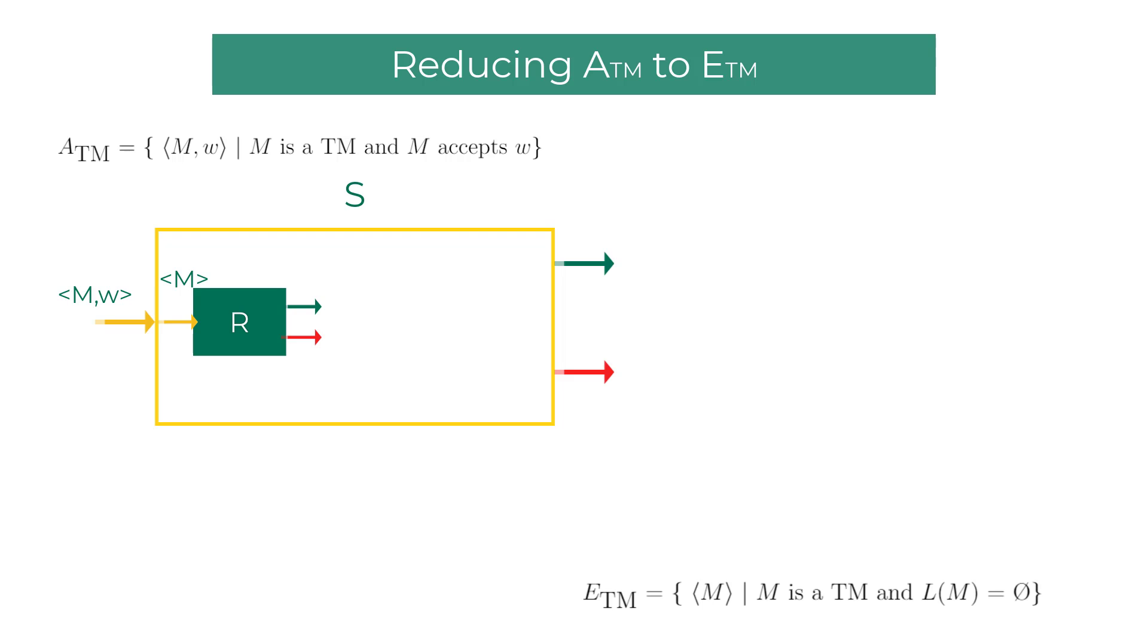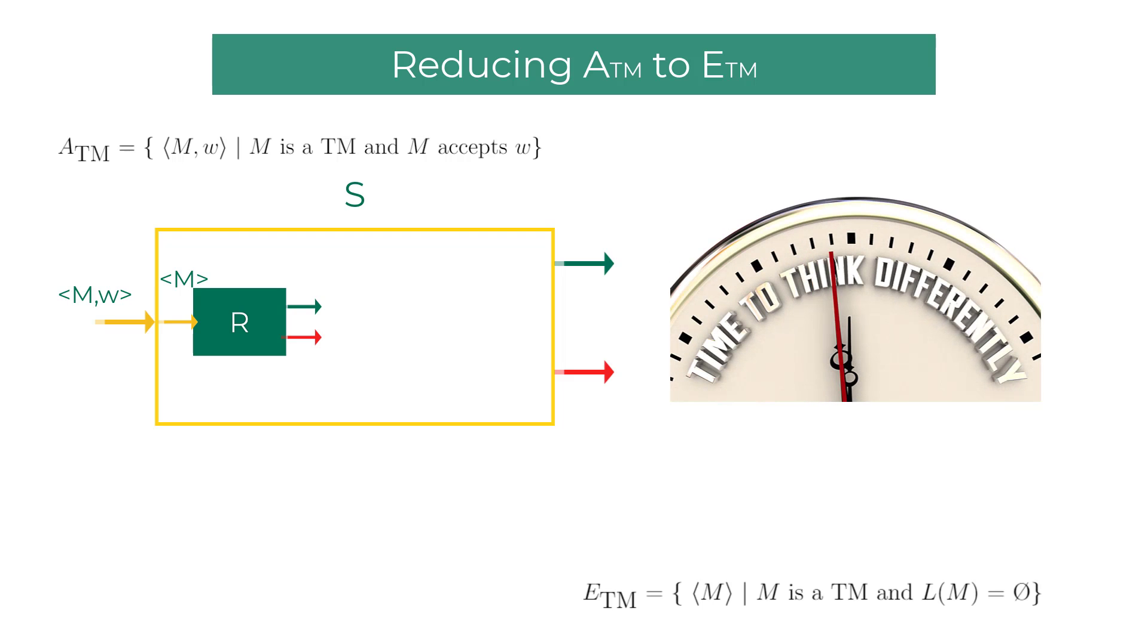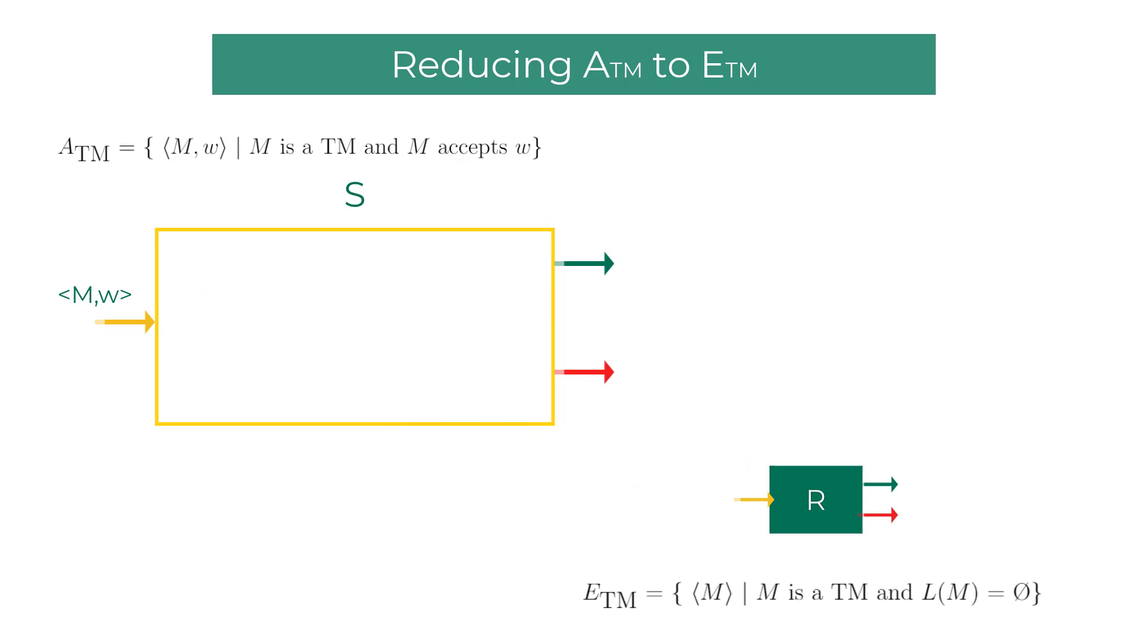We have to creatively come up with a machine that eliminates the possibility of looping and cleverly uses the ETM decider R to construct the decider S for ATM. I need to remind you that theoretical computer scientists spend significant time and effort coming up with these proofs. Here is how you create a decider S using R: after receiving the machine and string pair as input, the machine S dynamically creates the Turing machine M1.